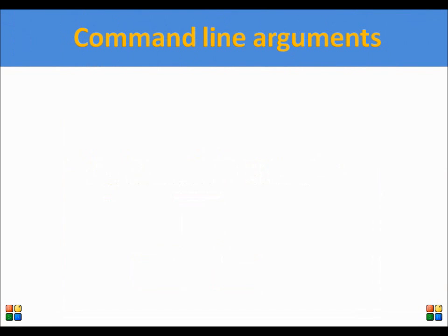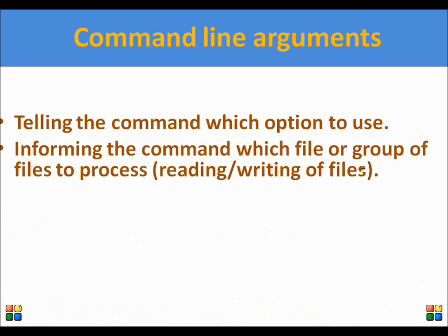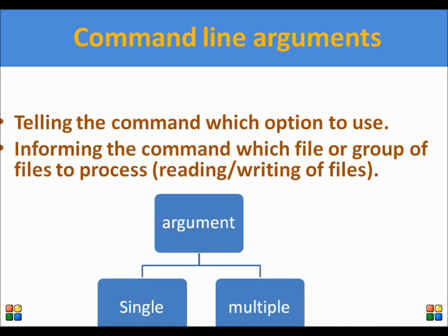In every programming language, we pass parameters to a function. So in shell programming, command line arguments is a similar concept. We need command line arguments for the following reasons: it tells the command which option to use, it also informs the command which file or group of files to process, and operations such as reading and writing can be done in files. There are two types of command line arguments: single or multiple.